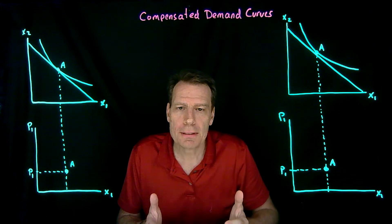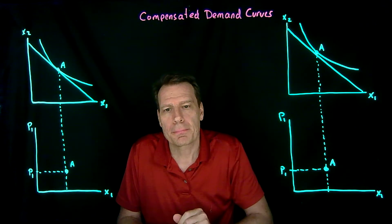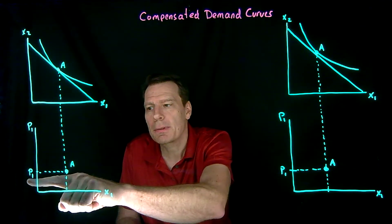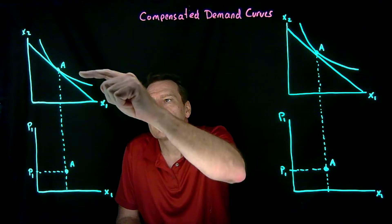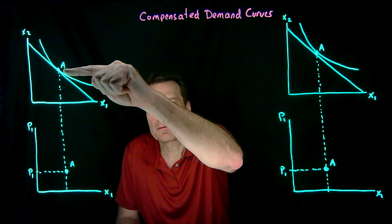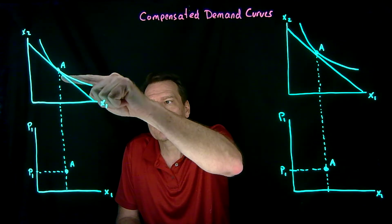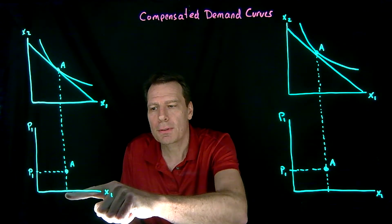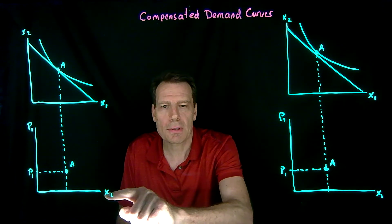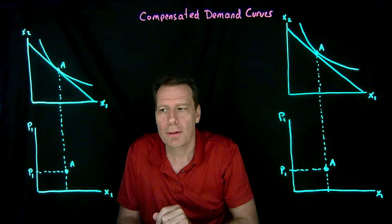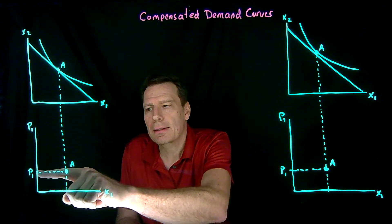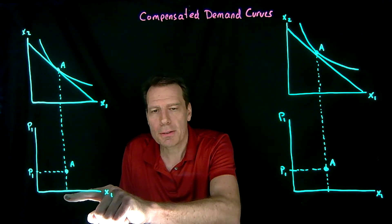We've now seen how we can derive a demand curve from the consumer diagram. We start with an initial budget that contains some initial price and find the optimal bundle. At that price, we consume this much of x1, which we can bring down to the lower graph because we're also measuring x1 there. So we then have one point on our demand curve: at this price, we're consuming this much of x1.